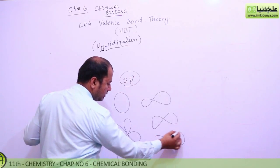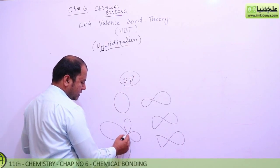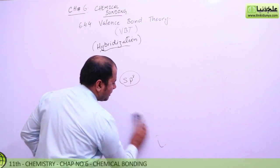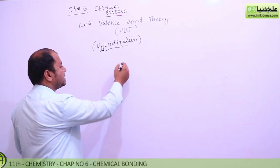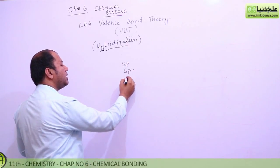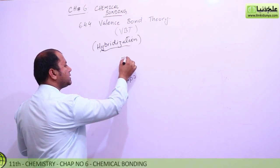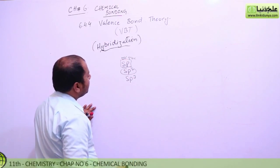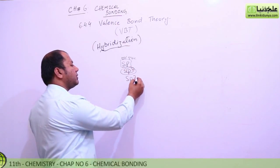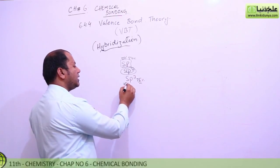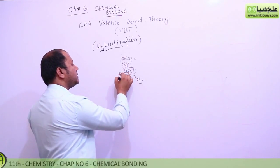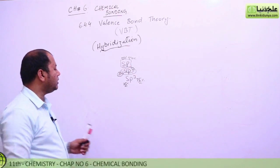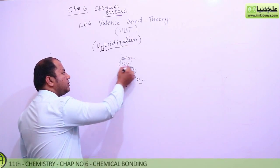In sp3, there's more p character - 75% p and 25% s. Actually, it's 33.3% s character and 66.6% p character. That really makes these new concepts: sp hybrid orbitals, sp2 hybrid orbitals, and sp3 hybrid orbitals.